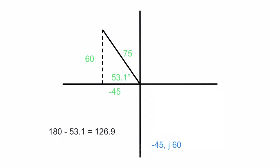And I get 126.9 degrees. So now I can easily say that this negative 45 J 60 has got a polar form of 75 at an angle of 126.9 degrees. That 126.9 tells me we are in quadrant two as well. Let's move it around. Let's go on to quadrant three.